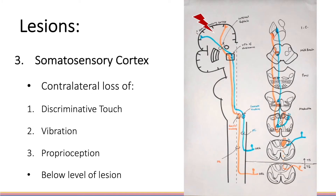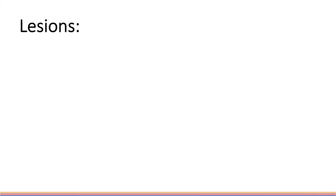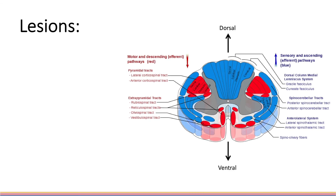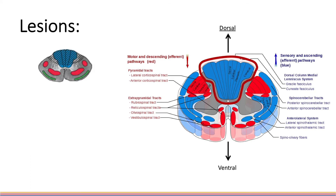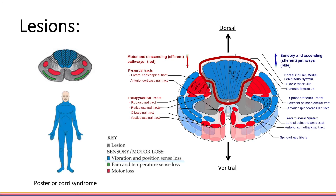Similarly, a lesion in the somatosensory cortex itself will also lead to contralateral loss, again because the fibres have already decussated within the medulla. Remember, the dorsal columns lie posteriorly or dorsally within the cord. Therefore, a lesion to the dorsal part of the cord will lead to loss of the dorsal column sensations below the level of the lesion. This is known as posterior cord syndrome.